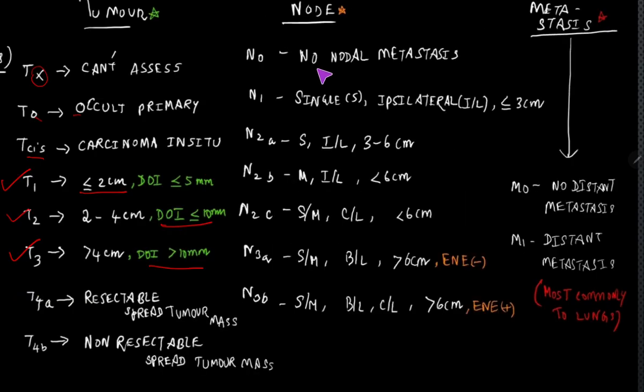Coming to the nodes, N0 is the non-nodal metastasis. To remember the numerically in node, we have started with TNM, right. So T is 2, so obviously N follows T. So thereby it is 3, and the multiples of the 3, twos are 6. The numbers are 3 and 6.